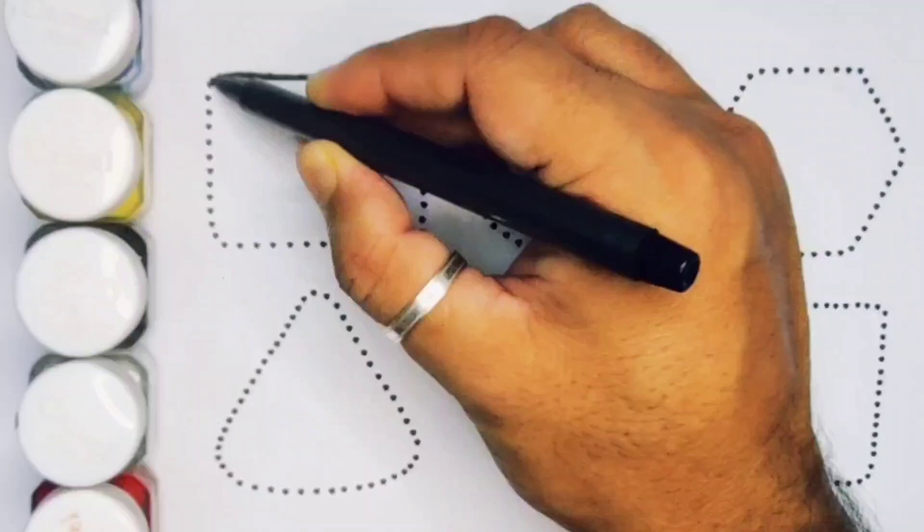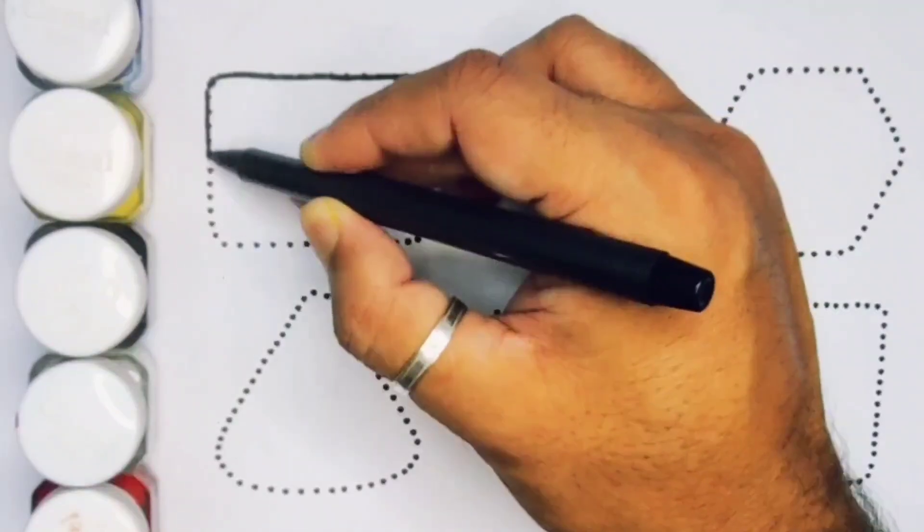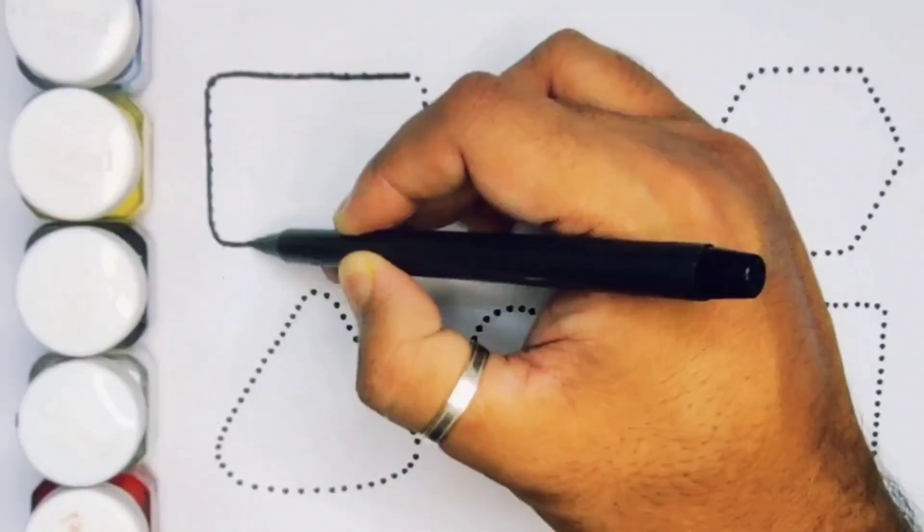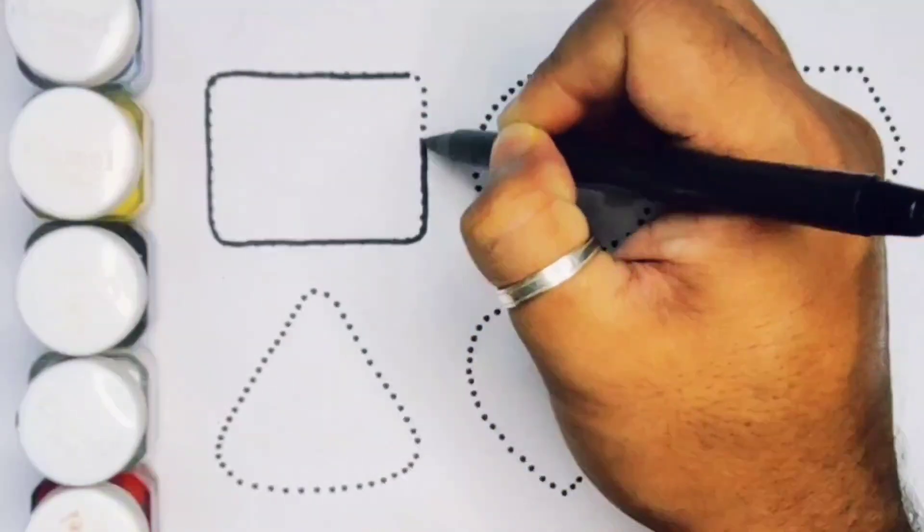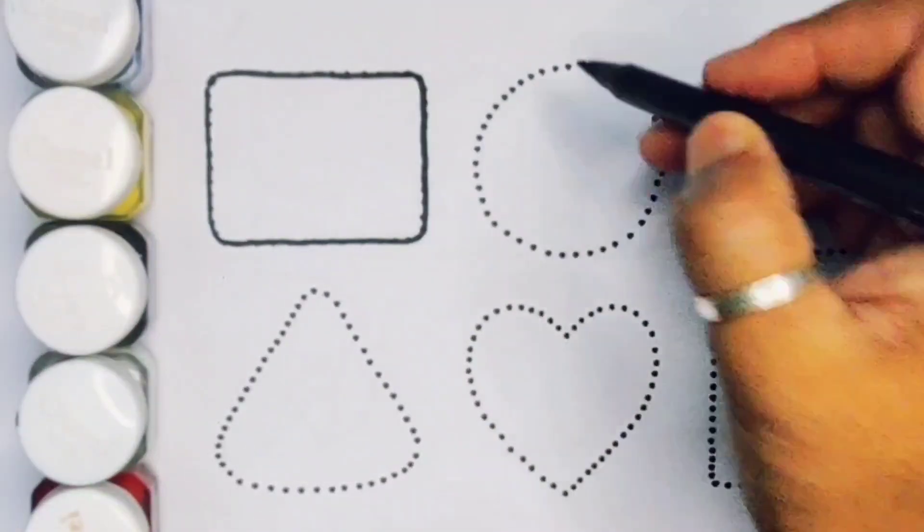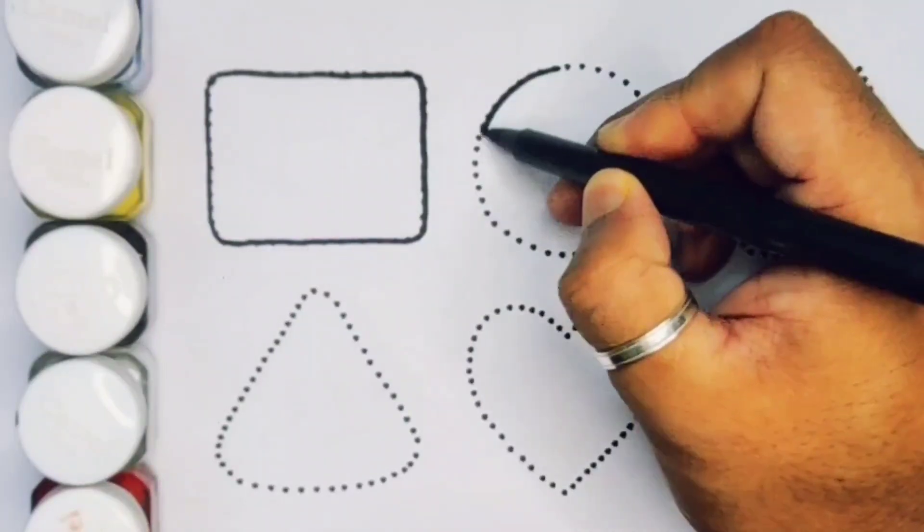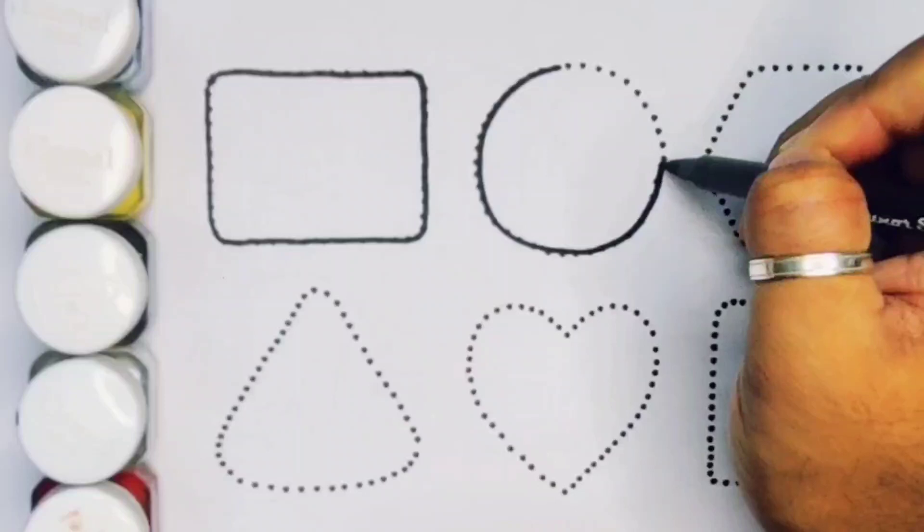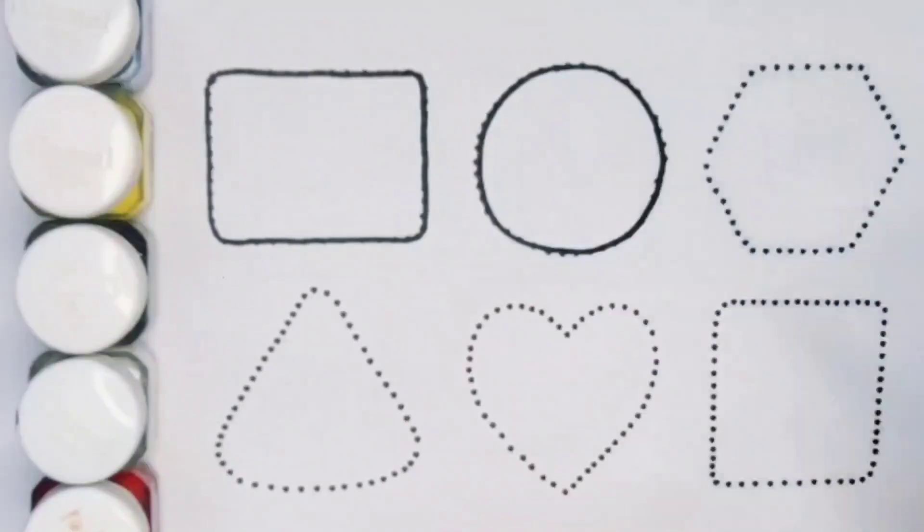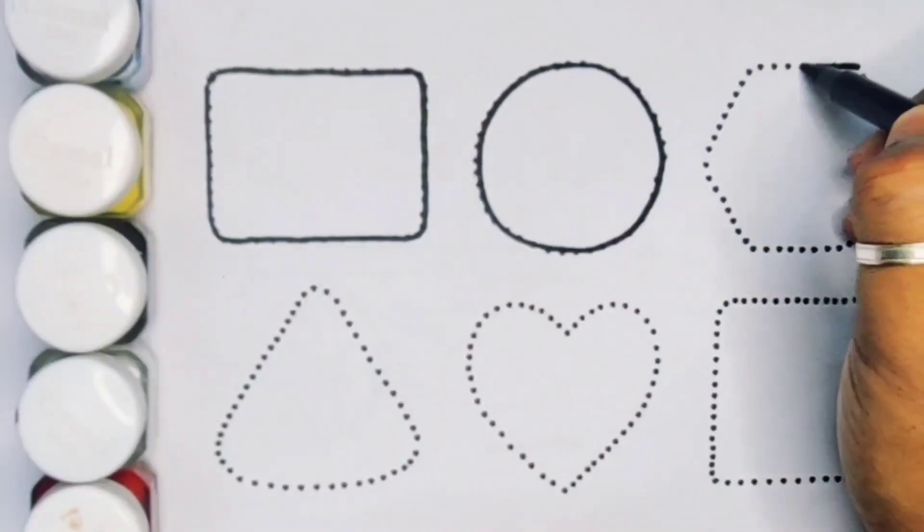Rectangle. Next kids, circle. Next, hexagon.